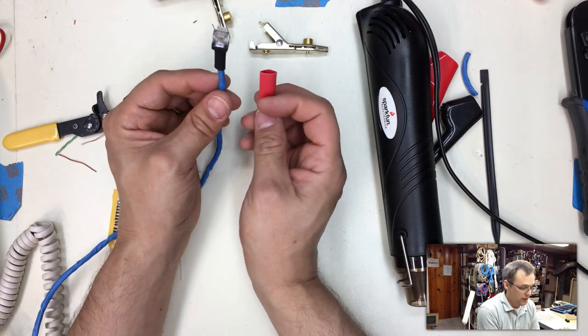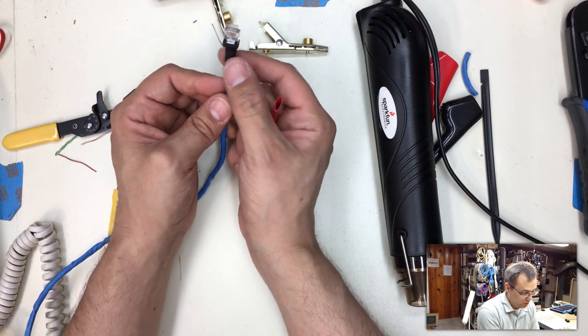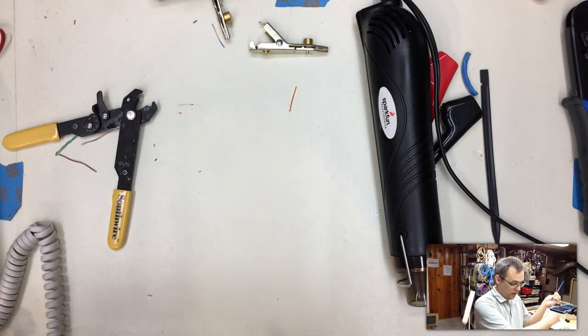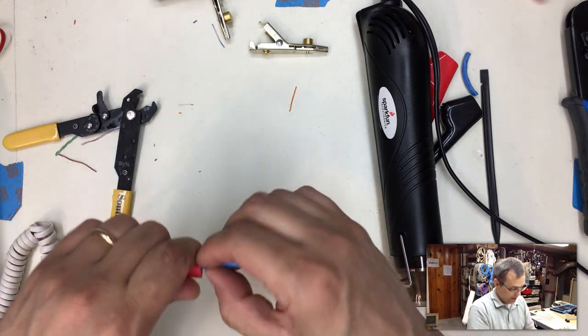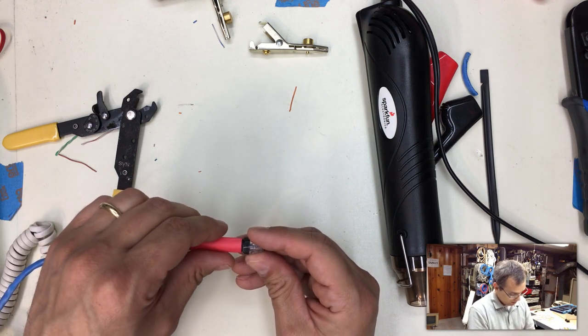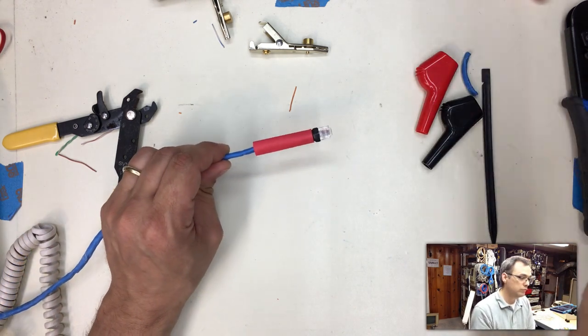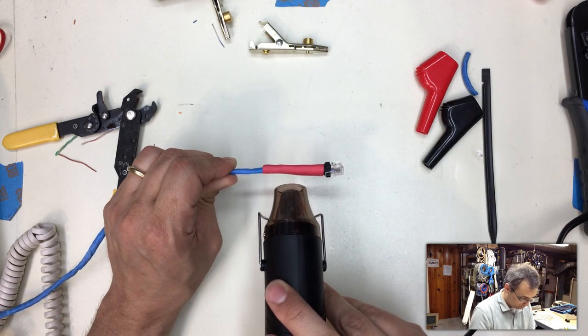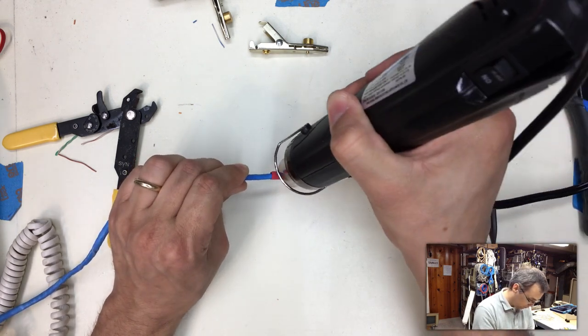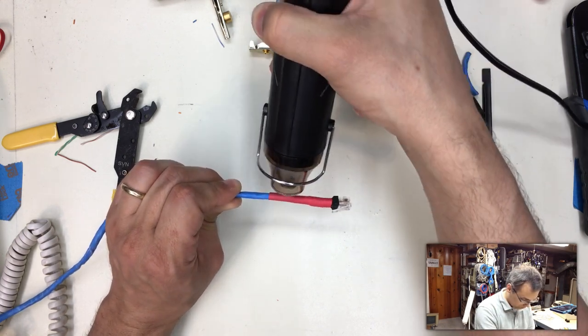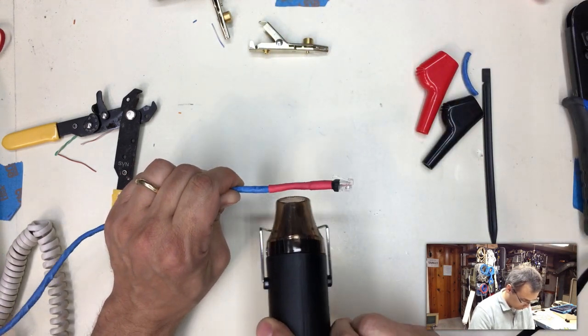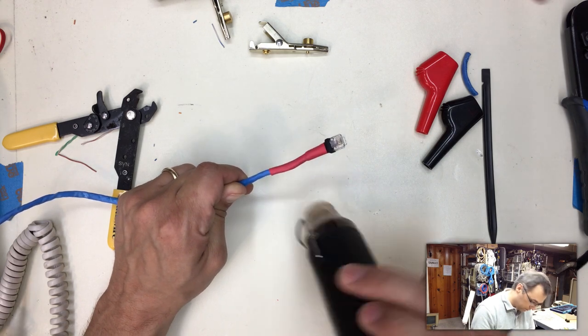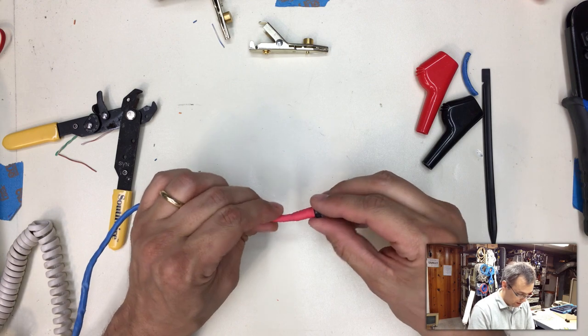And then I'm going to put a smaller diameter over top of that to shrink this diameter down because this won't shrink all the way over that. I thought it was not going to do that, so I went ahead and prepared ahead and got an extra piece that was the next diameter down. And then we shrink that over top of that. There we go. We got some good strain relief on there. Good. Okay.